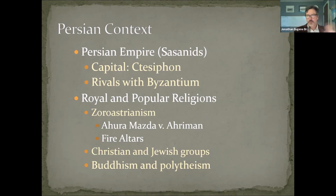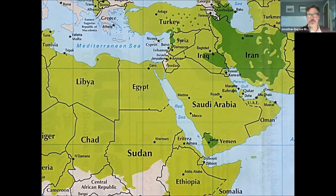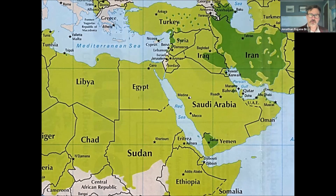The broader religious world of the Persian Empire was much more diverse, including significant Christian and Jewish groups, Buddhism on the far eastern border with India, and many kinds of polytheism — worship of various goddesses, gods, and natural forces. All of this made for a very diverse religious world. On the modern Middle East map, you can see the Persian capital near modern Baghdad covering Iran and Afghanistan, while the Byzantine Empire is centered on Constantinople. The cities of Mecca and Medina we'll be talking about more on Thursday.